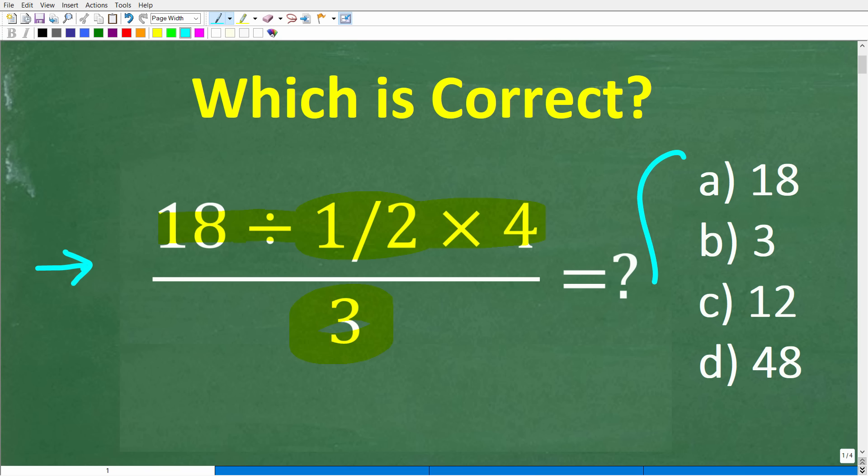Okay, so we do have a multiple choice question, and let's take a look at our possible answers. So a is 18, b is 3, c is 12, and d is 48. Now, the only rule here is no calculators, but if you can figure this out, go ahead and put your answer into the comment section.